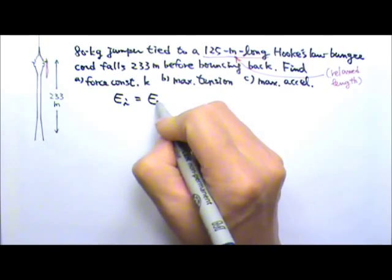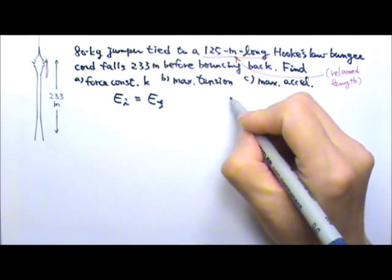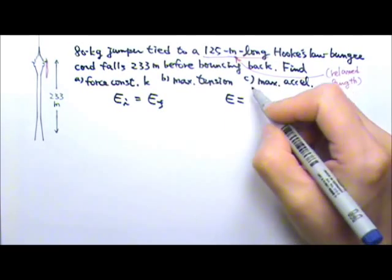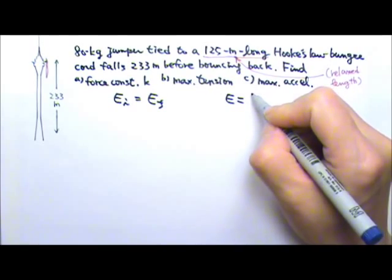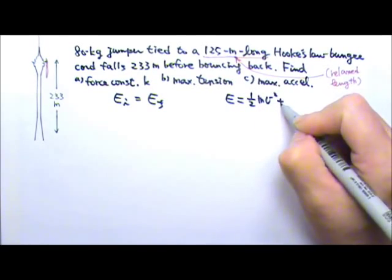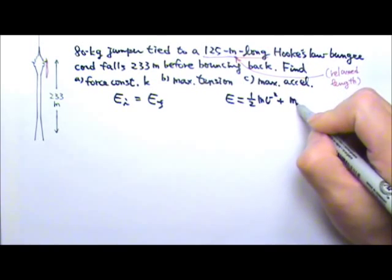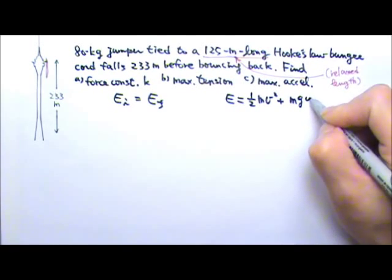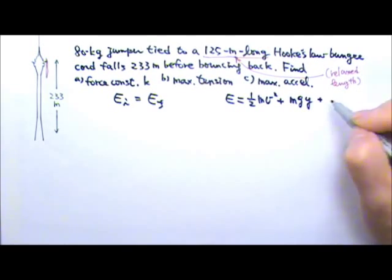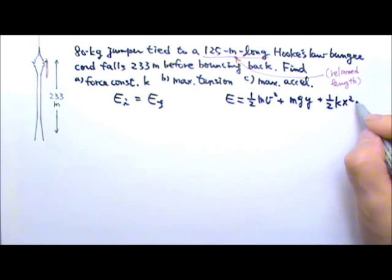E initial equals E final, where the total mechanical energy E includes kinetic energy (½mv²) and potential energy. We now have two kinds of potential energy: mgy, the gravitational potential energy, and ½kx², the potential energy stored in a spring.